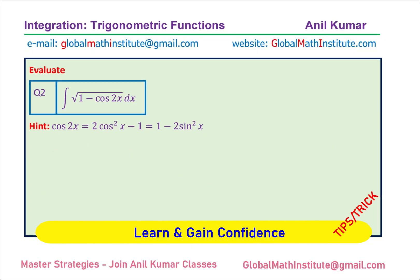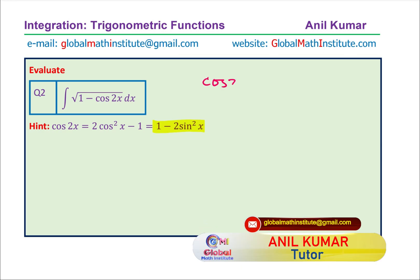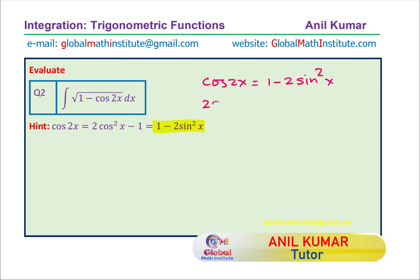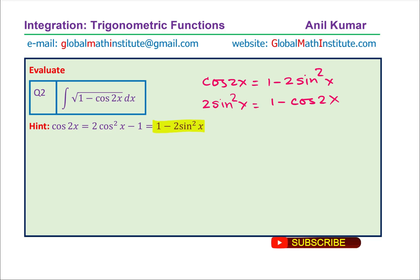Now let us practice by solving the next one: the integral of the square root of 1 minus cos2x. Here, 1 minus cos2x is involved. Which formula should we use? When cos2x equals 1 minus 2sin²x, it means 2sin²x equals 1 minus cos2x. So 1 minus cos2x equals 2sin²x.